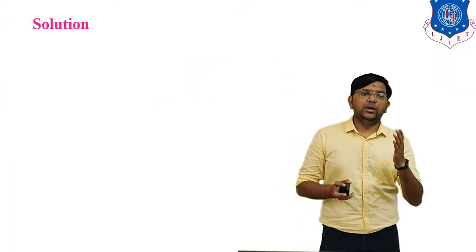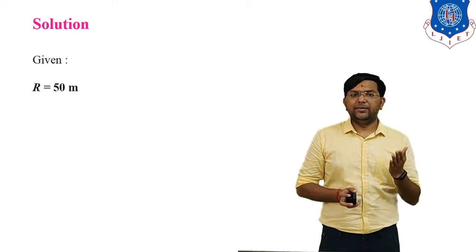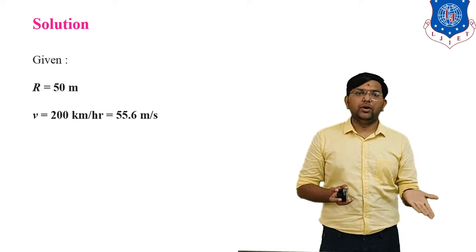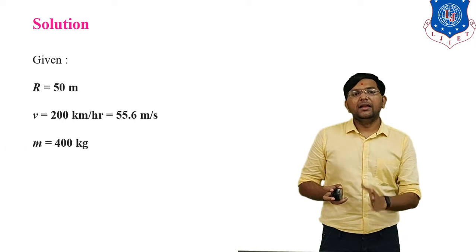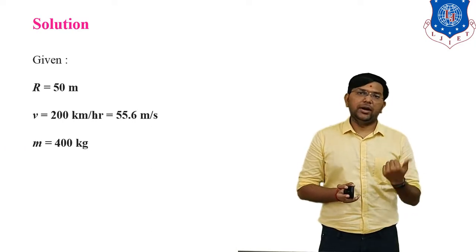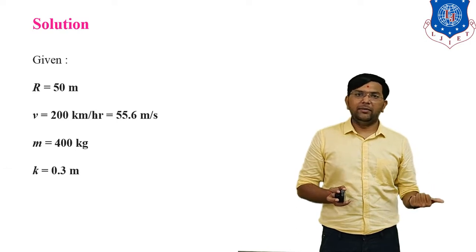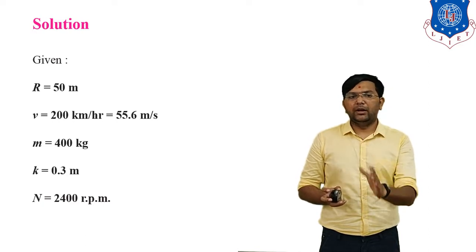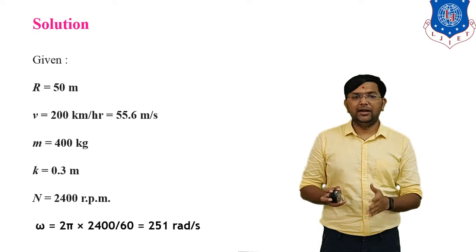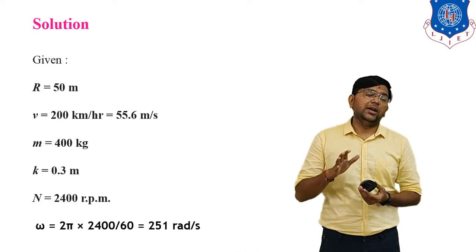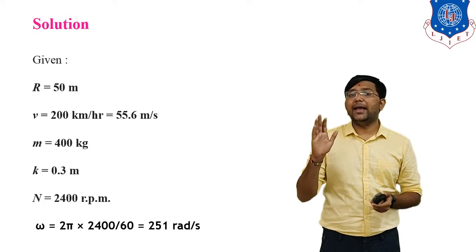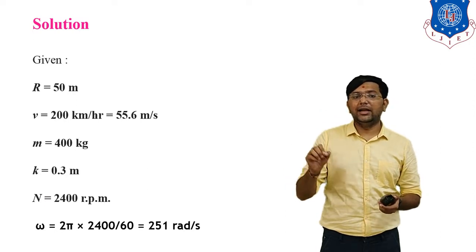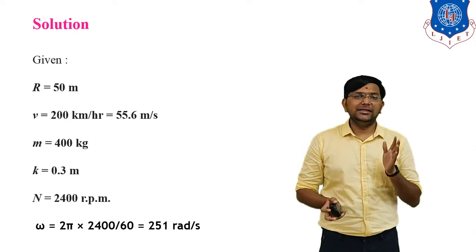Listing the given data: R = 50 m (radius of curvature), linear velocity = 200 km/h converted to 55.6 m/s, mass m = 400 kg, radius of gyration k = 0.3 m, and speed N = 2400 RPM. From N, we calculate angular velocity ω using ω = 2πN/60, giving ω = 251.4 rad/s.